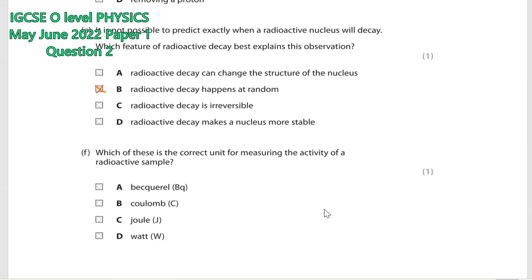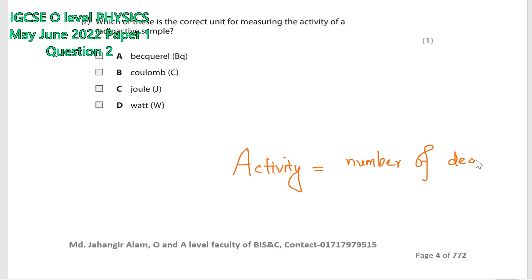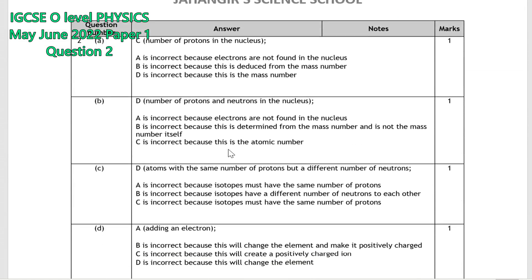Question number 2f: which of these is the correct unit for measuring the activity of a radioactive sample? Activity means number of decays divided by time taken. The SI unit of radioactivity is the becquerel. One becquerel means one decay per second. This is the mark scheme answer.